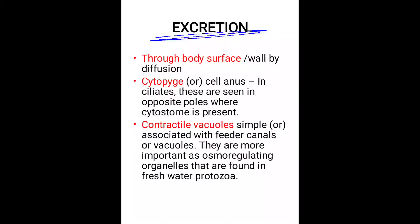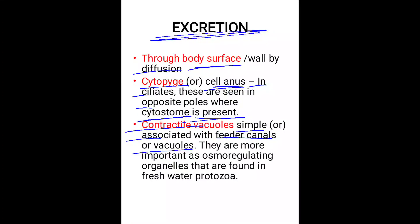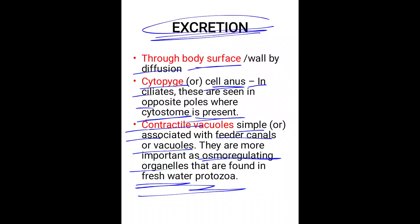Excretion in protozoans occurs through the body surface or wall by diffusion, or through the cytopyge, which is the anus of the organism. In ciliates, the cytopyge is seen at the opposite pole from the cytosome. Contractile vacuoles are associated with feeder canals and are important as osmoregulating organelles, found mainly in freshwater protozoans.